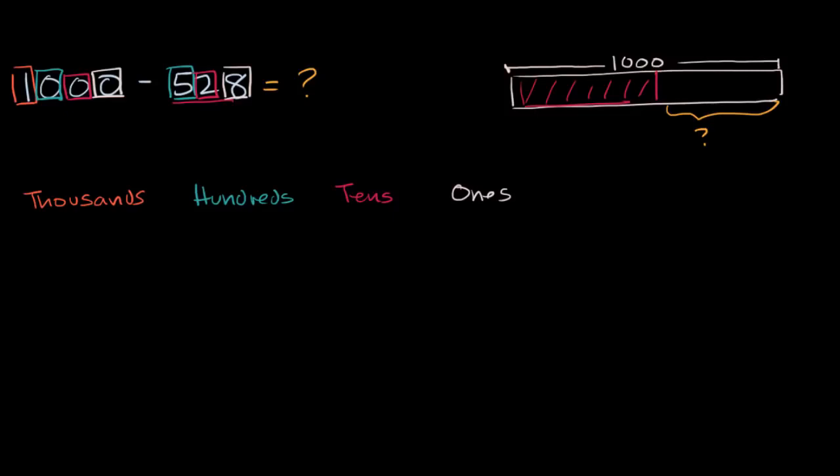Now let me also rewrite these numbers. And I'm going to do it using the standard method. So I have 1,000. And then I have 0 hundreds. I have 0 tens. And I have 0 ones. And from that I am going to subtract 5 hundreds. 2 tens. And 8 ones. So let's do both of these at the same time.